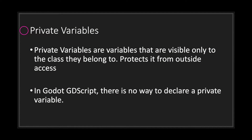In this episode we will be talking about fake protected variables, but first let's talk about private variables. A private variable is a variable that is only visible to the class it belongs to. A private variable is protected from outside access. In most programming languages you would use the private keyword, however in Godot GDScript there is no way to declare a private variable — that keyword or functionality is not provided.